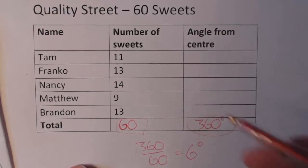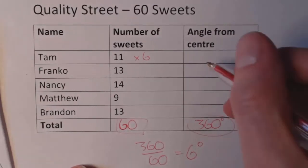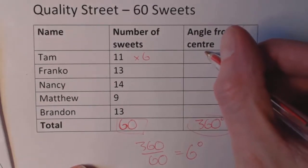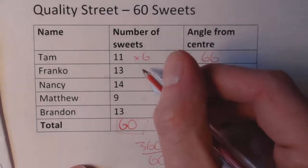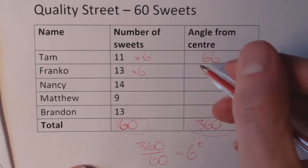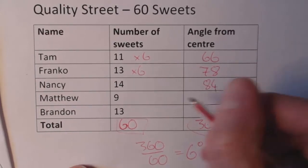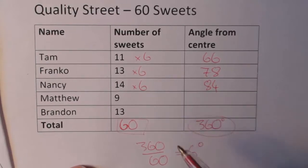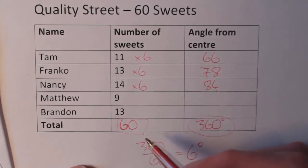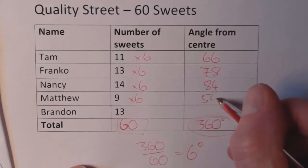All we do here then is we basically, Tam got 11 sweets so we're going to times 11 by 6, so that's 66. Franko, he got 78 sweets. Nancy got 84. So you're timing the number of sweets by how much each sweet is worth in terms of the pie chart.